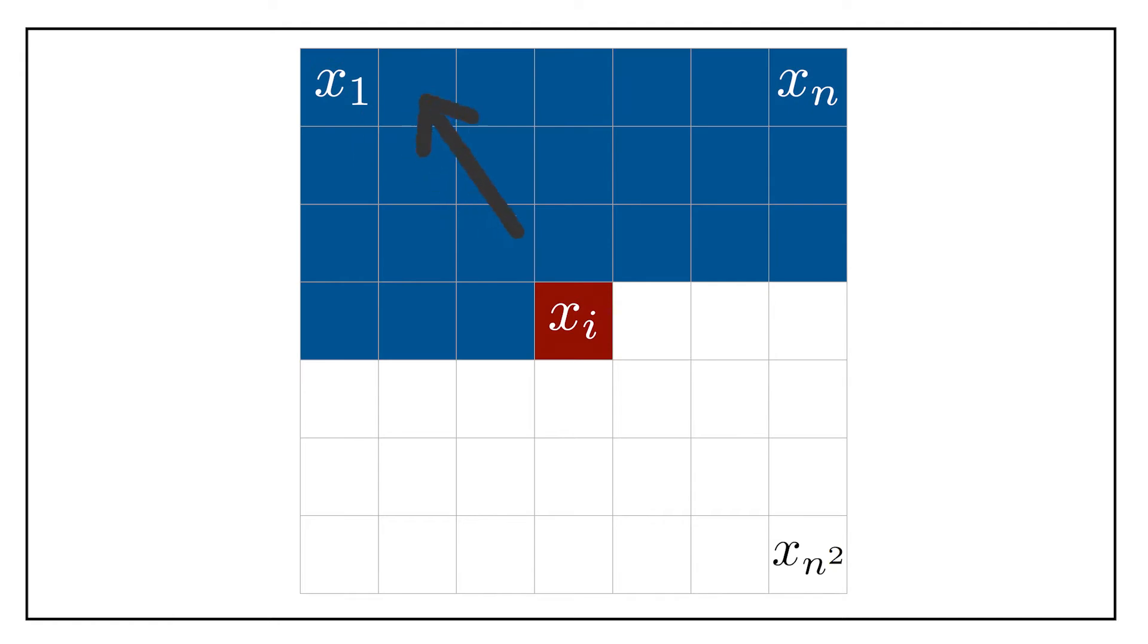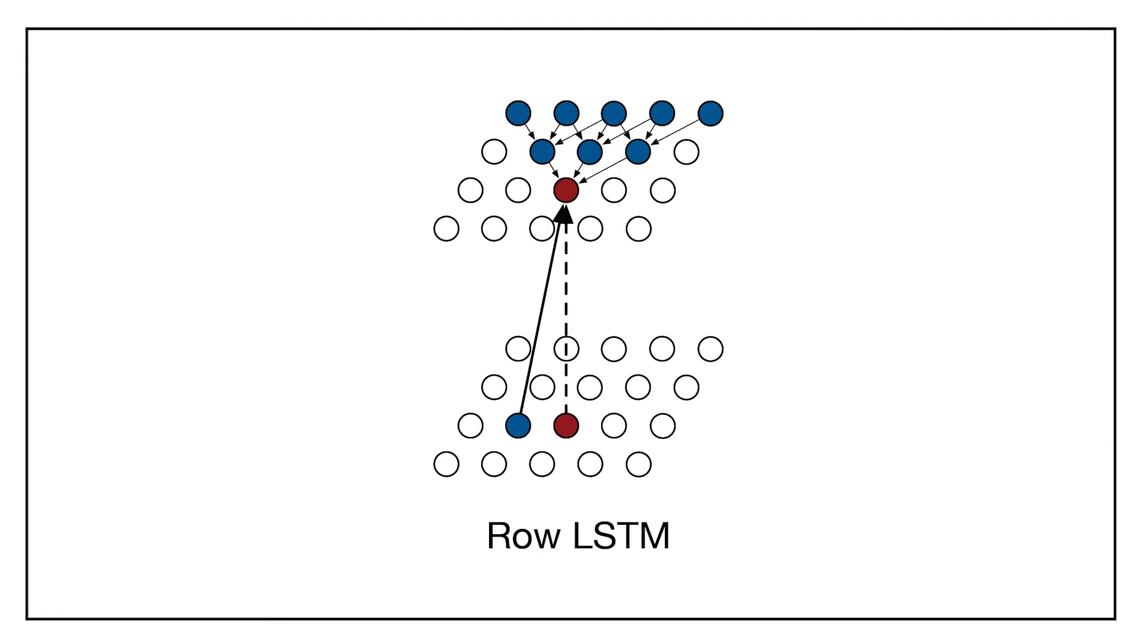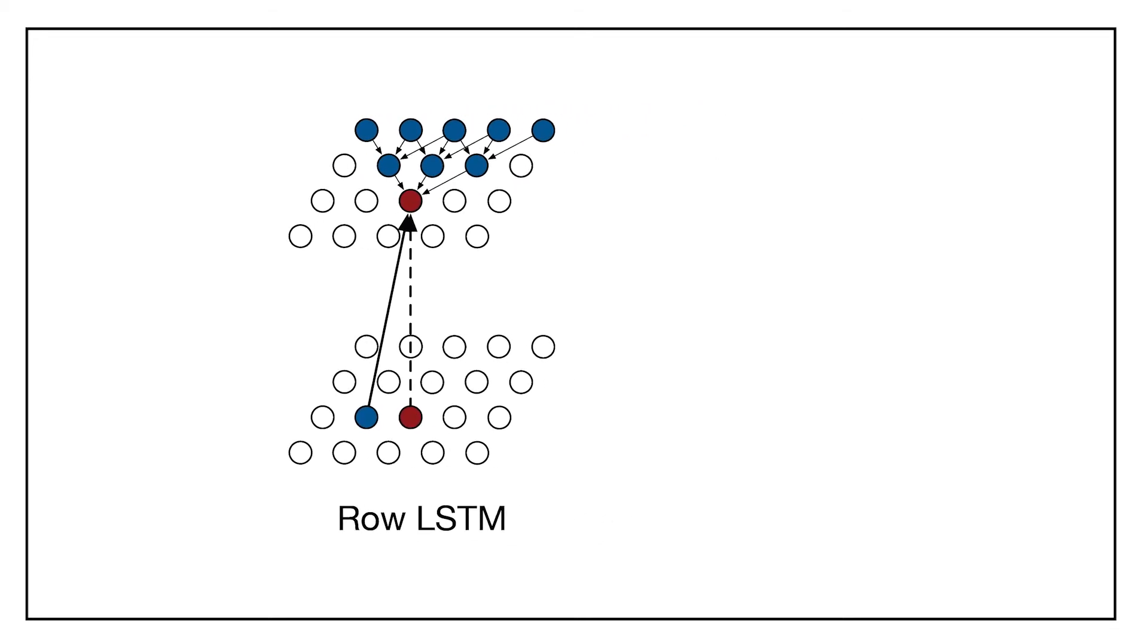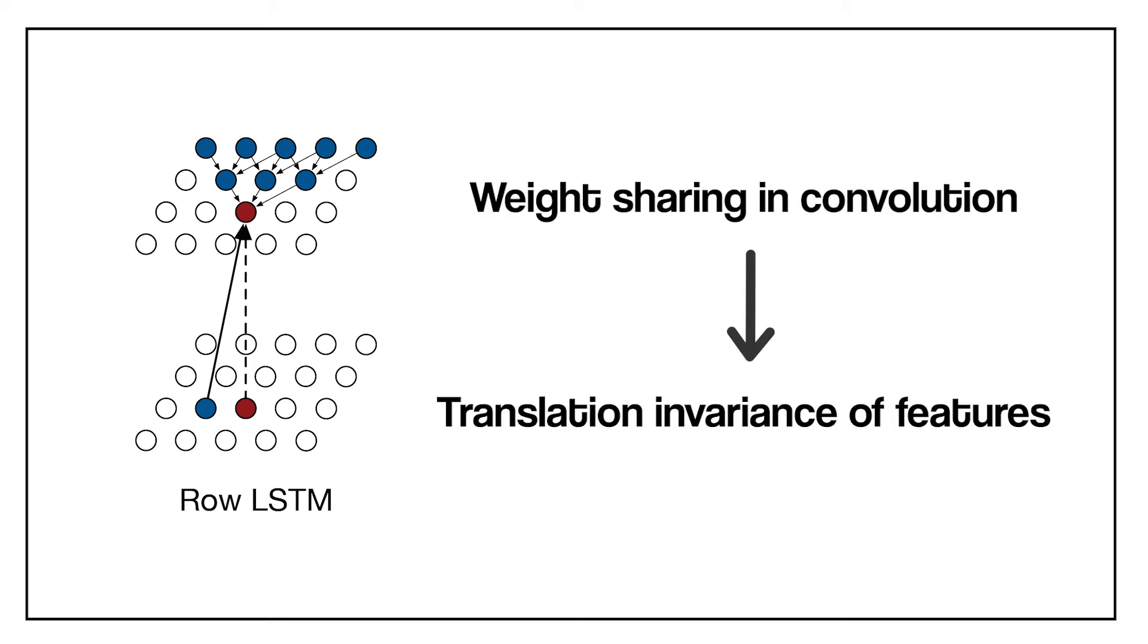For the Row LSTM, we process the image row by row from top to bottom, computing features for a whole row at once. Indeed, for a pixel xi, the layer captures a roughly triangular context above the pixel, meaning that an LSTM is used to predict the pixel using the hidden states of the pixels above it. Keeping in mind that the hidden states of the pixels above are also determined by the pixels above them, it results in a triangular shape. The weight sharing in the convolution ensures translation invariance of the computed features along each row.